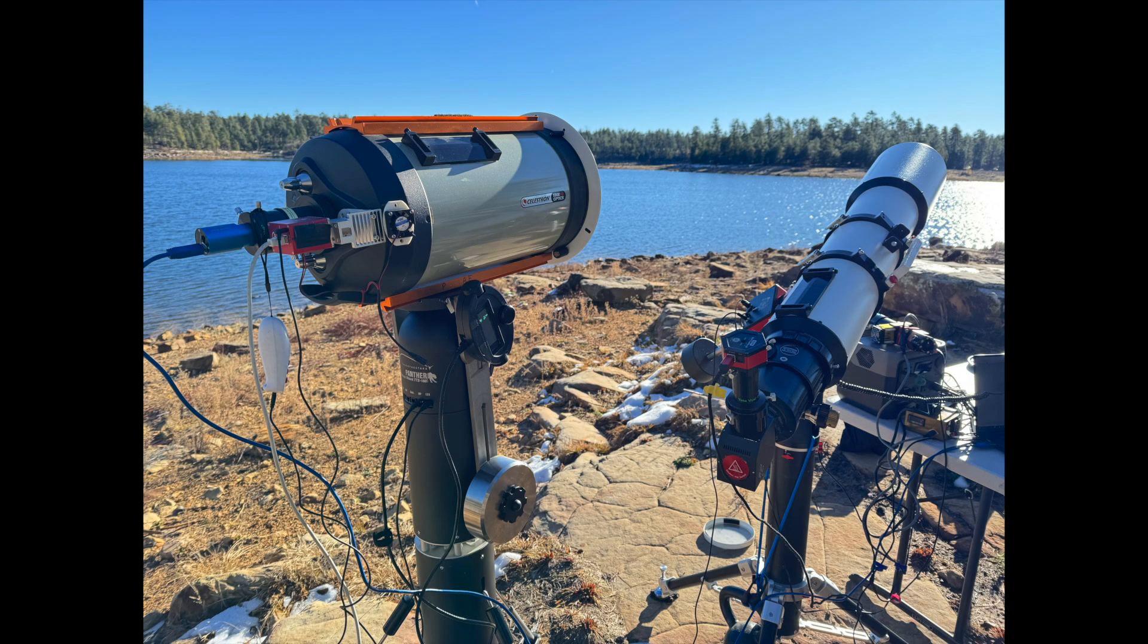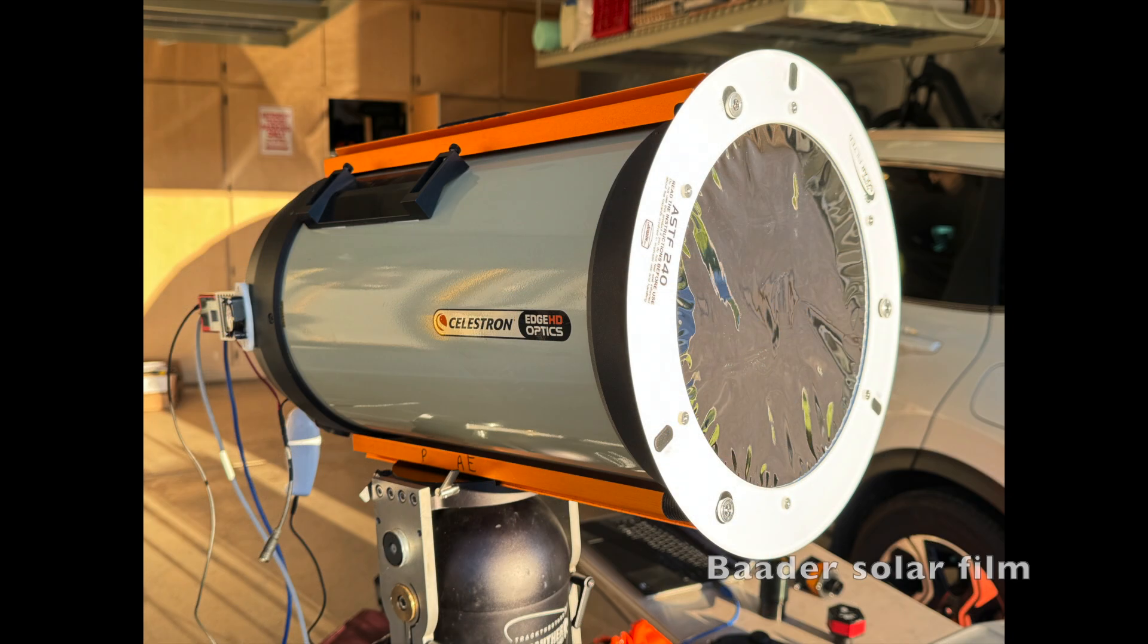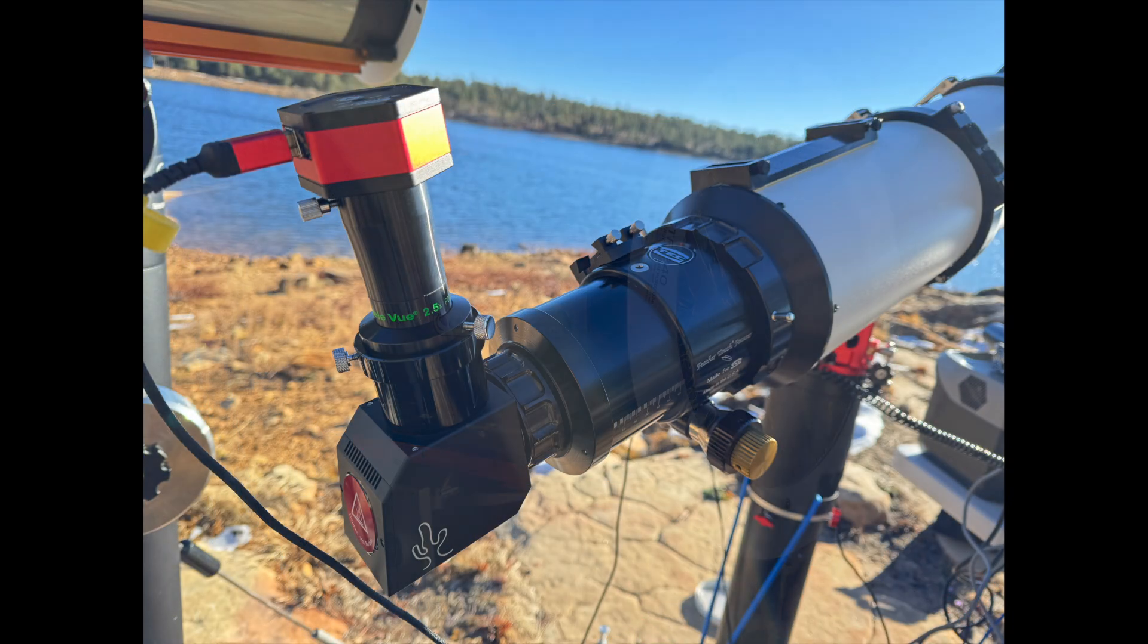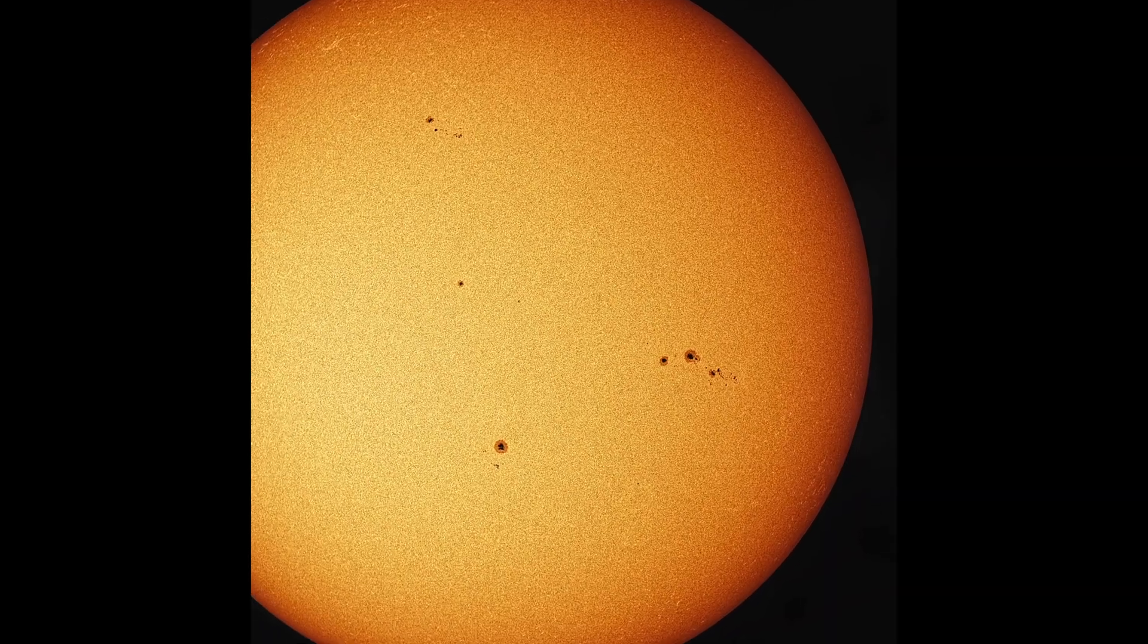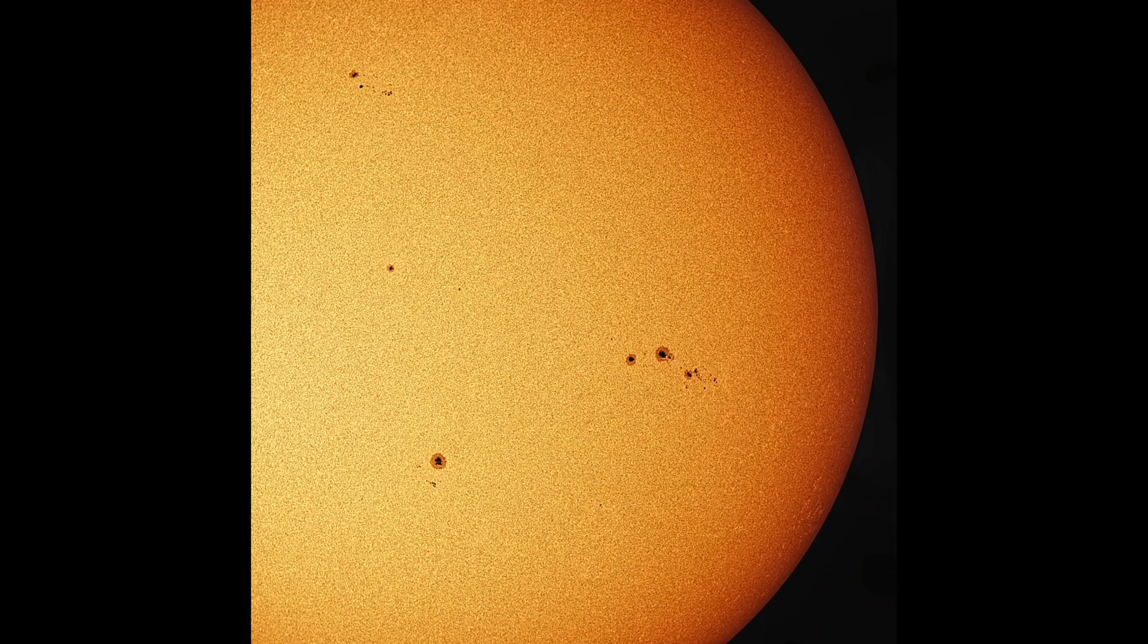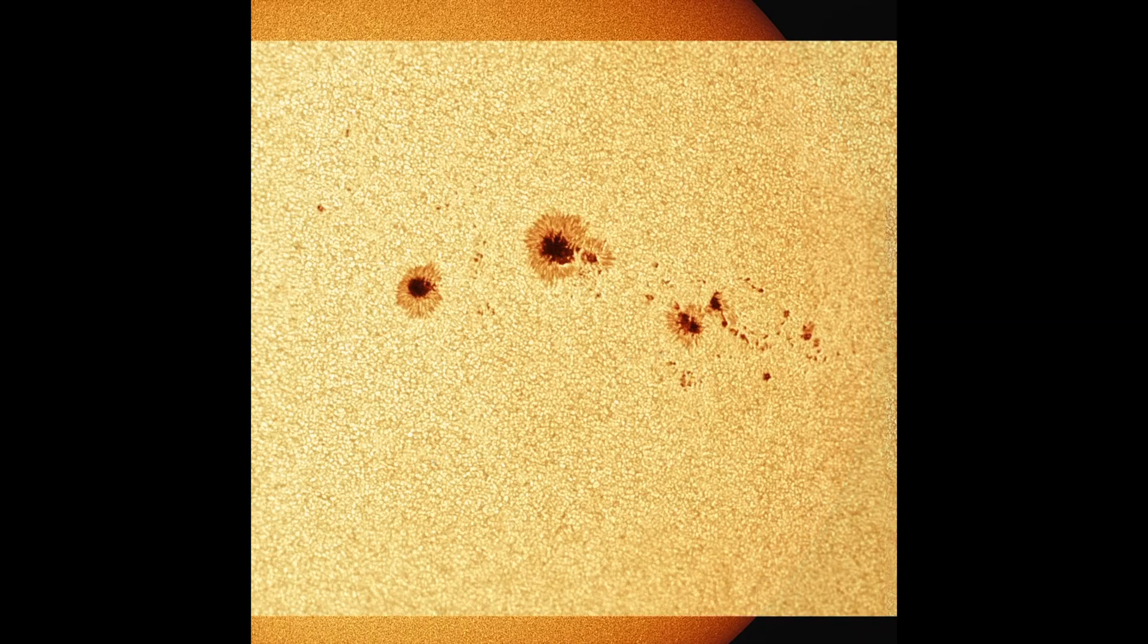There are many ways you can observe the sun. The simplest and least expensive is to look at the sun in broadband with either a full aperture filter or a Herschel wedge on a refractor. This is an inexpensive entry into solar observing and shows sunspots, granulation, and faculae.